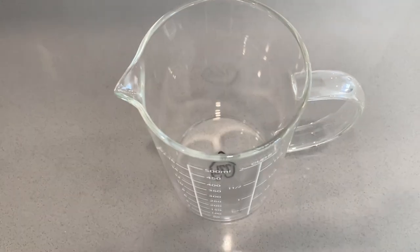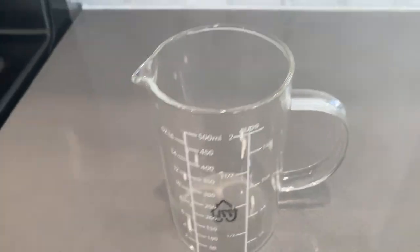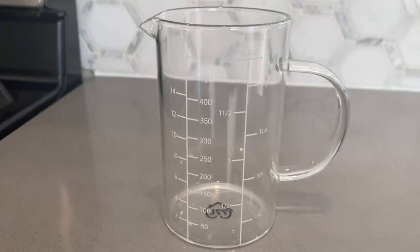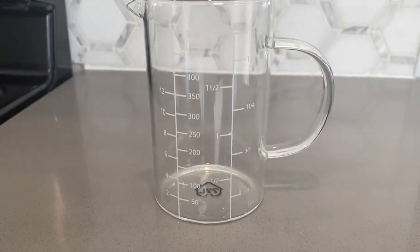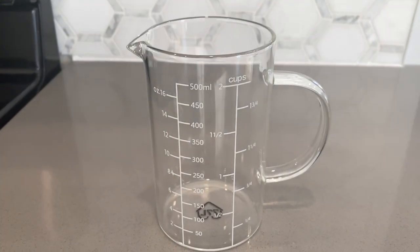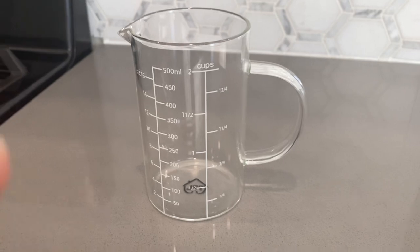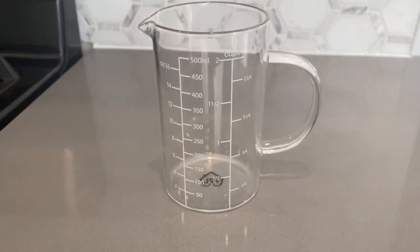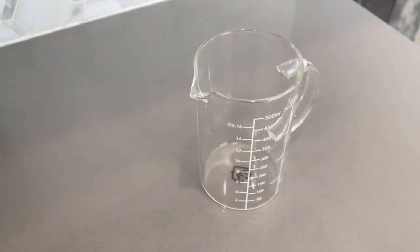One of the standout features of this measuring cup is its insulated handle, which makes it comfortable to hold even when measuring hot liquids. The V-shaped spout ensures easy pouring, and the cup is designed with an easy-to-read measurement scale, allowing you to quickly and accurately measure your ingredients.